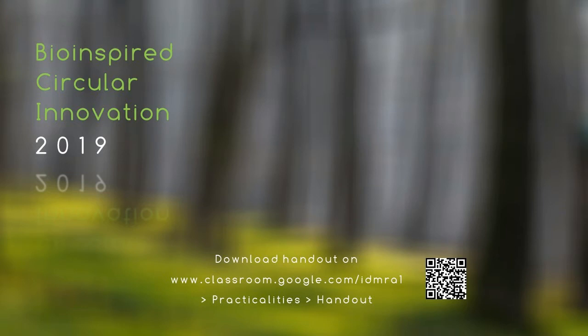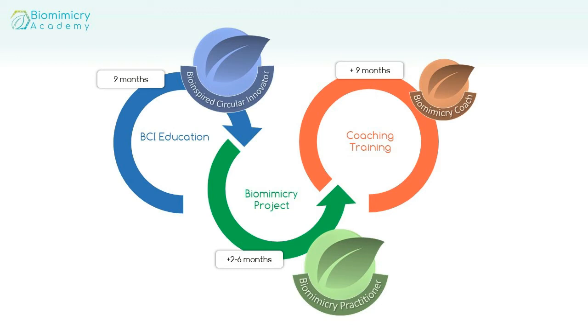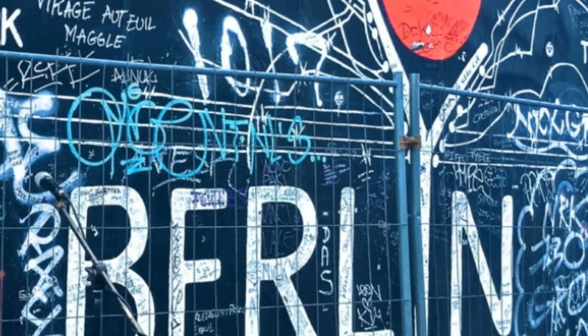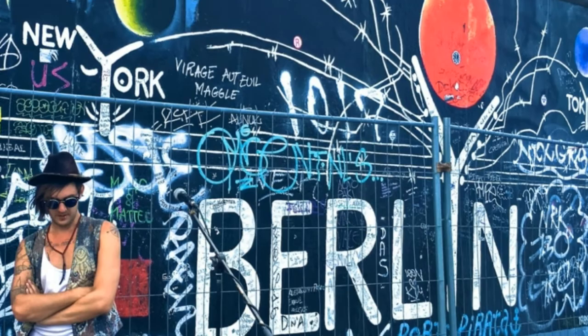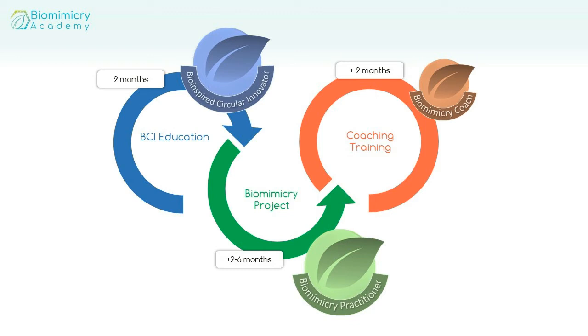The handout consists of an overview about what biomimicry is, what bio-inspired circular innovation is, some case studies, and an overview about the curriculum itself. The full program with on-site sessions in Berlin plus the online curriculum takes nine months in total. If you want to earn the degree of a biomimicry practitioner — the first biomimicry degree you can earn in Europe — you continue with a biomimicry project where you develop your own project.